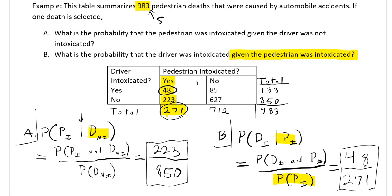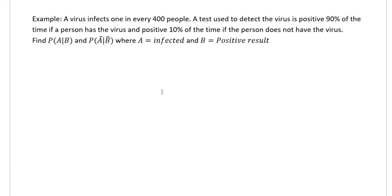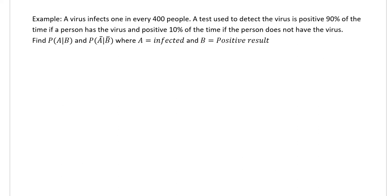You'll see some examples with two-way tables like this and it should be pretty easy to pick out the values — very often the totals will also be given. However, there are a couple of examples on the homework dealing with viruses, which is a pretty apt topic right now. First example: a virus infects one in every 400 people. A test is positive 90% of the time if a person has the virus, and positive 10% of the time if the person does not. We're going to create a two-way table with infected vs. not infected and positive vs. negative.